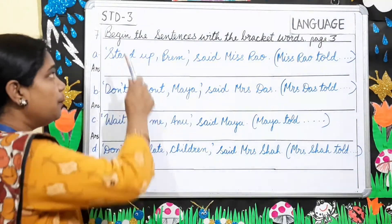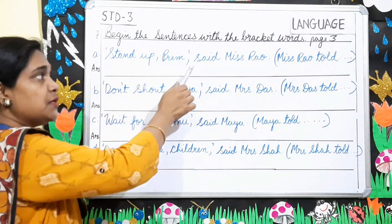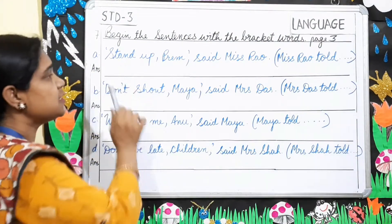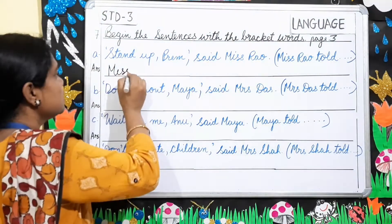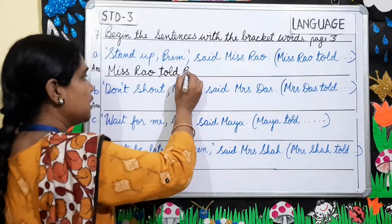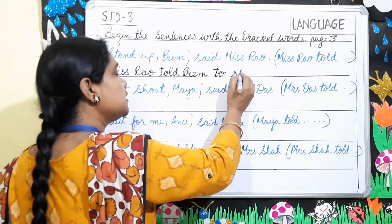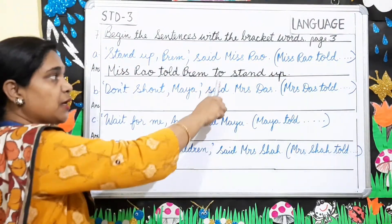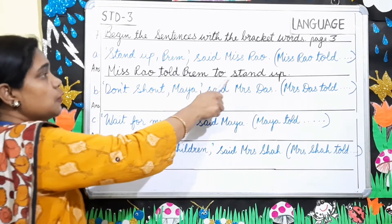Exercise 7: Begin the sentences with the bracket words. Number A: 'Stand up, Prem,' said Miss Rao. In the bracket it's given 'Miss Rao told.' You have to begin your sentence with these words given in the bracket. So you will write: Miss Rao told Prem to stand up. Children, in this sentence you will make use of 'to.' So your answer is: Miss Rao told Prem to stand up.